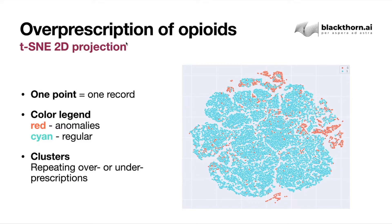One point here stands for one record, and one record is one stay of a patient in a hospital for a particular number of days, during which the patient takes an opioid drug in some form within some route of administration, according to the recorded data. The score is how likely this patient stay is anomalous — the amount of drug over this time was either much larger or much lower than typical. Based on the score, we painted all the points in two colors: cyan for regular points with normal dosages, and red.